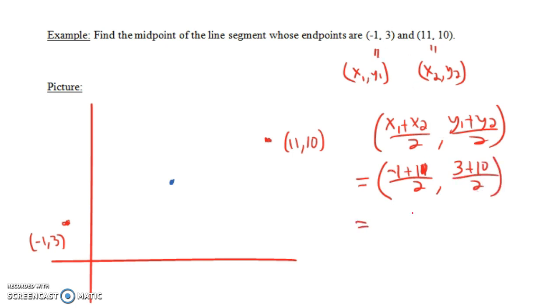So notice -1 + 11 is 10, so we have 10/2, 13/2. And that is (5, 13/2). And if you wanted to write it as a decimal, that would be (5, 6.5).